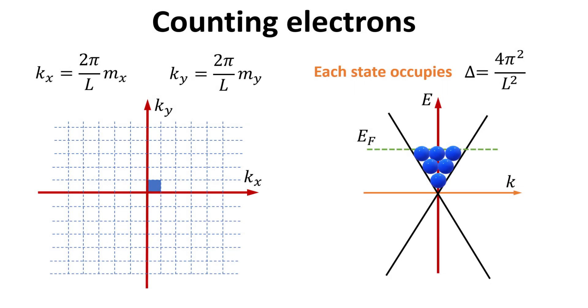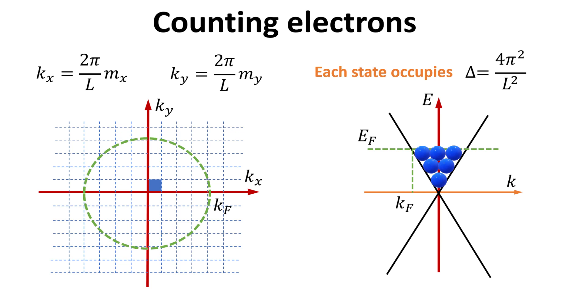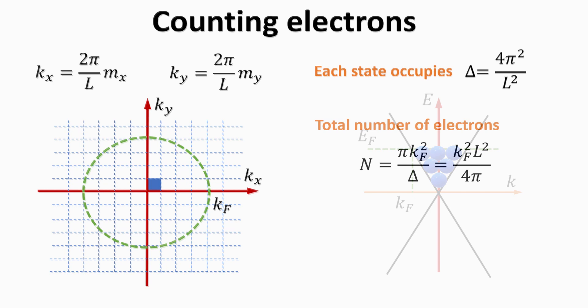Consider graphene at zero temperature, with electrons filled up to the Fermi level in the conduction band. We can define a wave vector associated with the Fermi energy, denoted as kf. We see that all electronic states with wave vectors up to kf are occupied. The contour corresponding to kf in the 2D k-space is illustrated on the left. Then, the number of electrons in the conduction band is given by the area given by the kf contour, divided by the area of each state, delta.